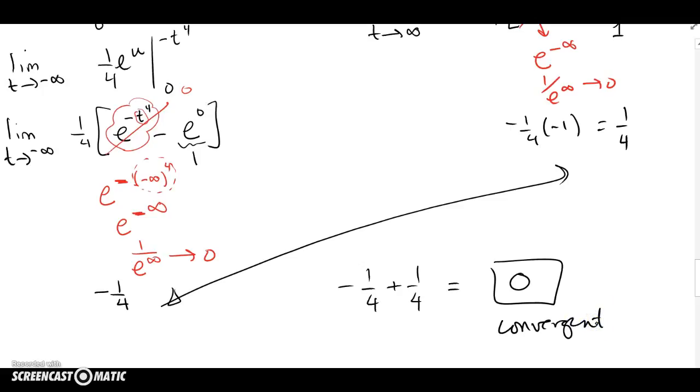And when we looked at the graph initially, it seemed like it was an odd function, and both pieces would kind of cancel each other out.